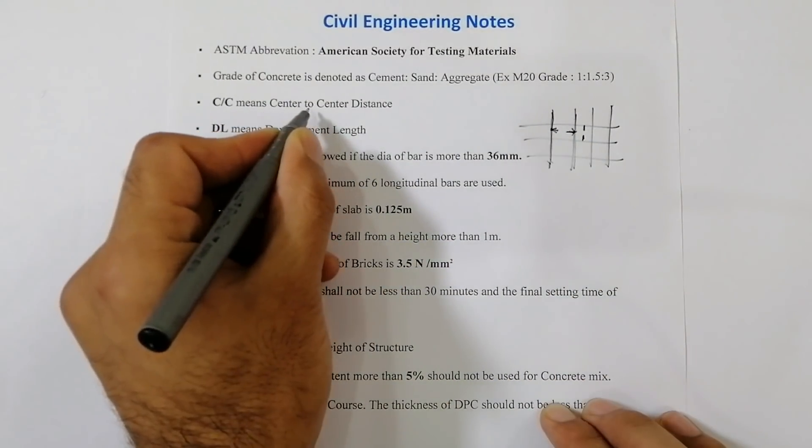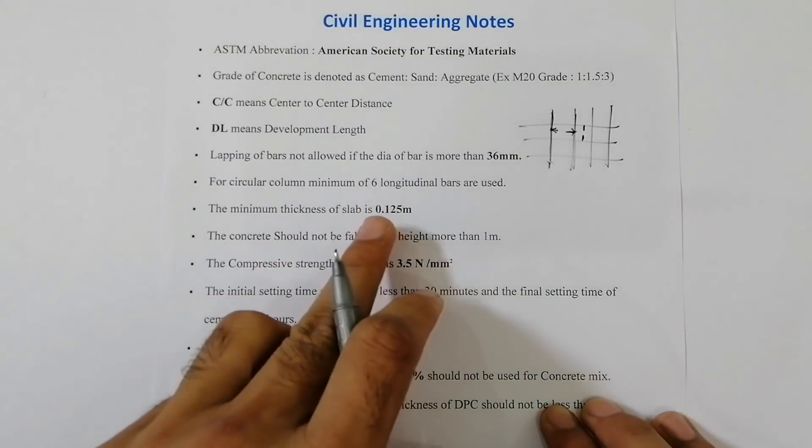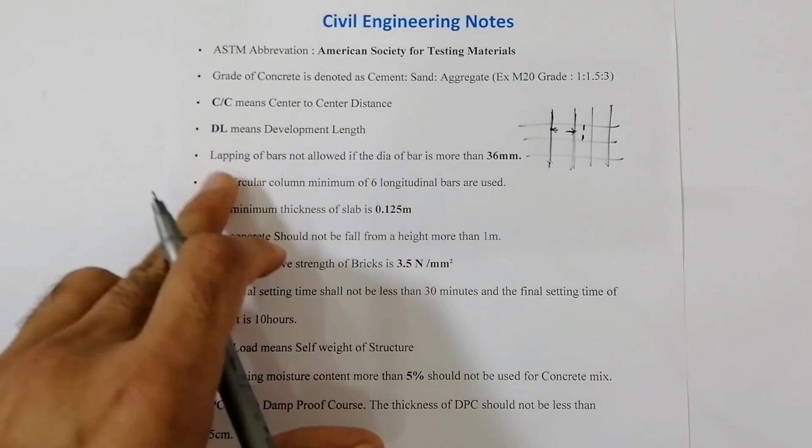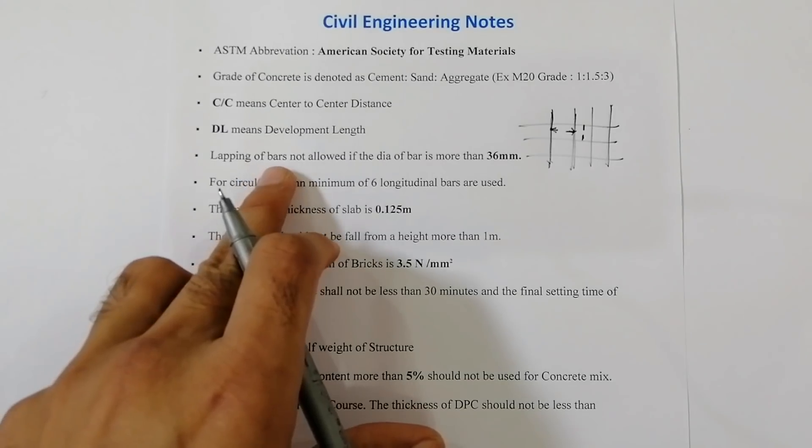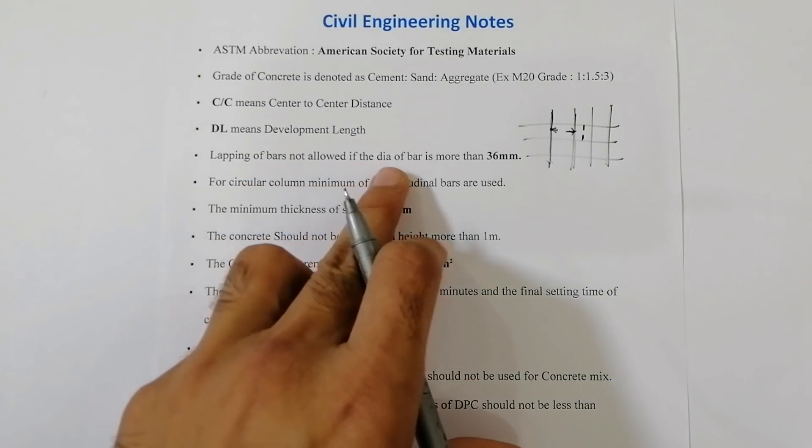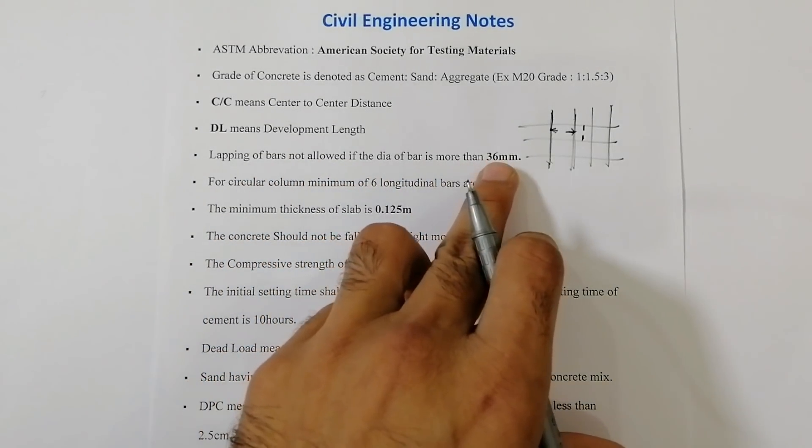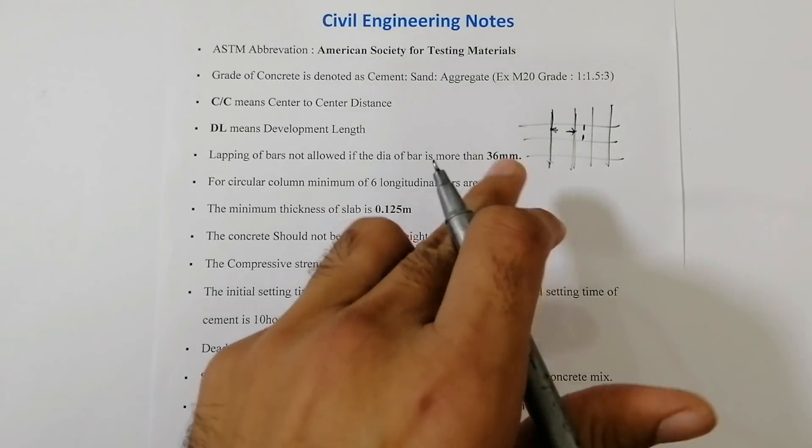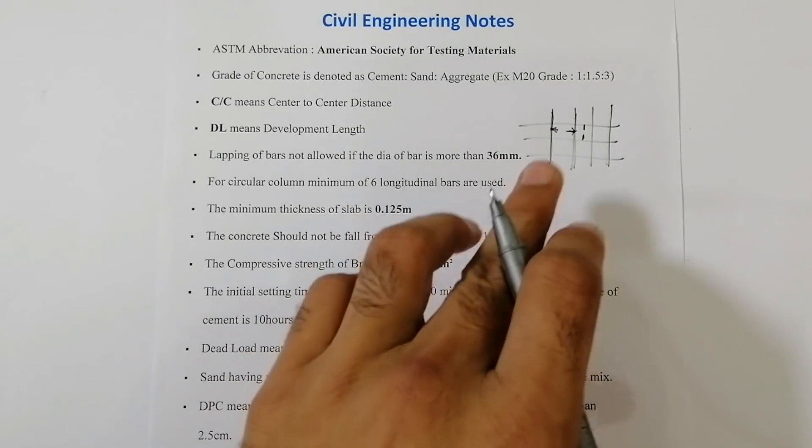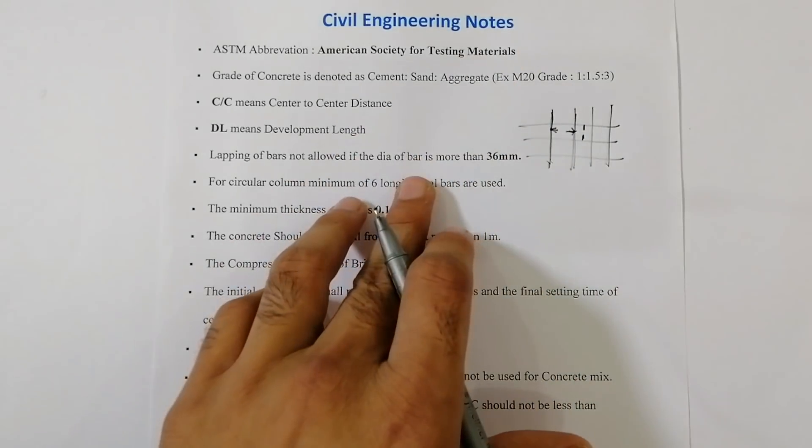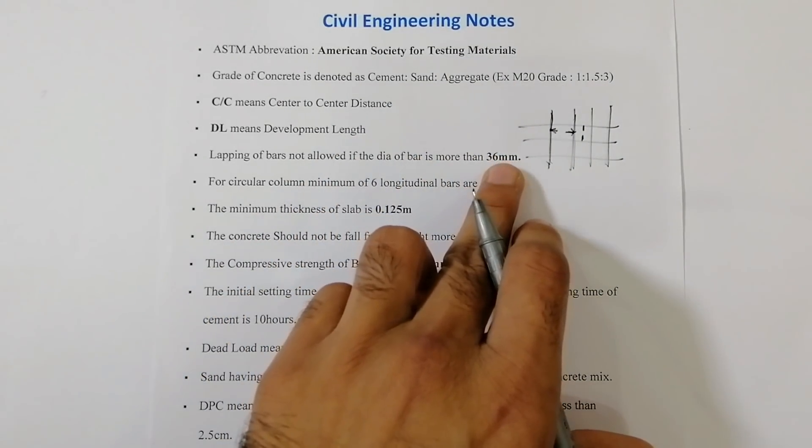Now the fourth one: lapping of bar not allowed if the diameter of steel bar is more than 36 millimeters. NRC slips are also for column and beam. If you want to provide lapping length and the diameter of steel bar is more than 36 millimeters, you should not provide lapping length.